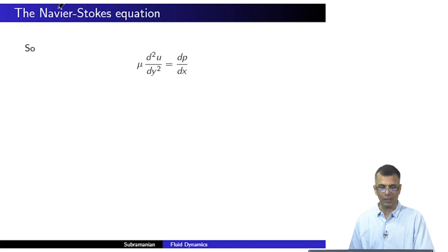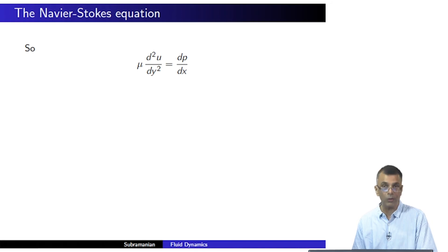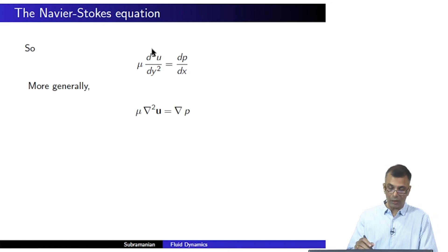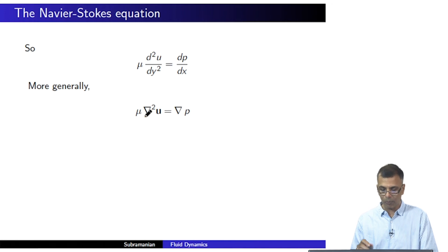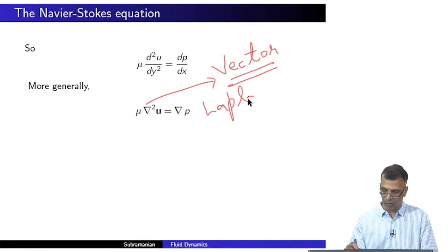In a way, we've already written down the Navier-Stokes equation, except this is only the force part. We should allow for the fact that the fluid element can be accelerating. More generally, considering all dimensions, it's not just d²u/dy²; it's a Laplacian — a grad-squared — except please remember that this is actually a vector Laplacian, not the scalar Laplacian that you are generally familiar with.